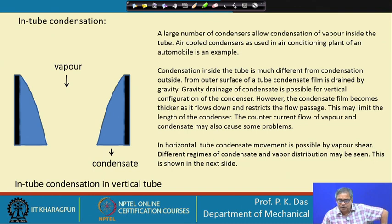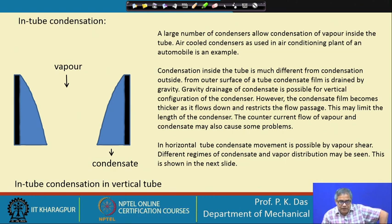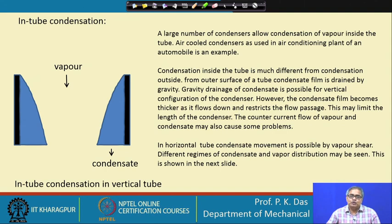Condensation inside the tube is much different from condensation outside. From the outer surface of a tube the film is drained by gravity, and gravity drainage of condensate is possible for vertical configurations. However, the condensate film becomes thicker as it flows down, which chokes the passage for vapour flow. If condensate flows downward and vapour flows upward, there is a counter-flow between the condensate and the vapour.